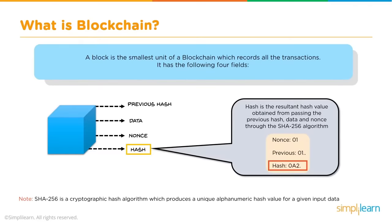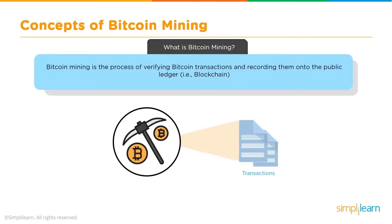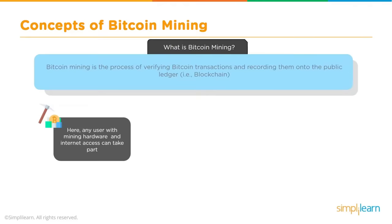Bitcoin mining is the process of verifying Bitcoin transactions and recording them onto the public blockchain ledger. In blockchain, transactions are verified by Bitcoin users — specifically those with the required hardware and computing power, called miners. There is no centralized body; unlike legacy transactions where we depended on a regulatory body or bank, in Bitcoin any user with mining hardware and internet access can participate and contribute to the mining process.